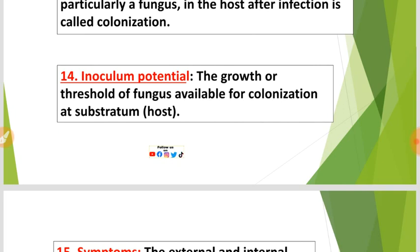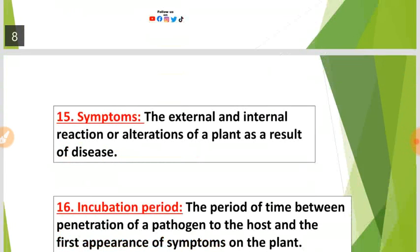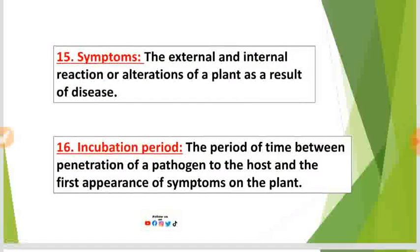Number fourteen: Inoculum potential — the growth or threshold of fungus available for colonization of a pathogen in a host or substratum. Number fifteen: Symptoms — the external and internal reaction or alteration of a plant as a result of disease.